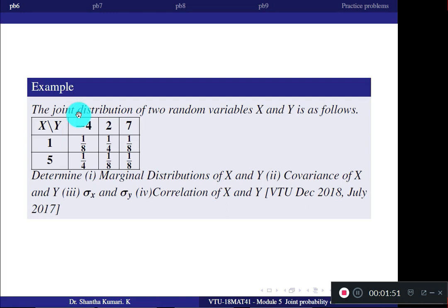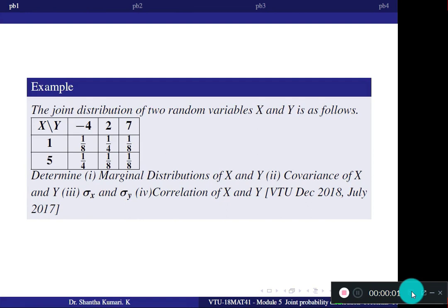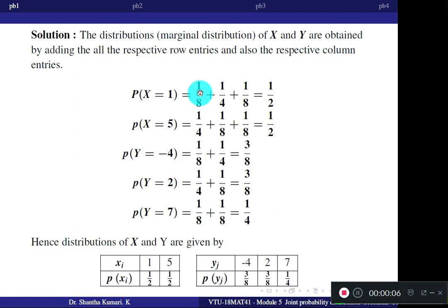To find the marginal densities of Y, we add the entries column-wise. So 1/8 plus 1/4 gives you the marginal probability of Y equal to minus 4. For X equal to 1, adding the three entries in front gives the answer 1/2.